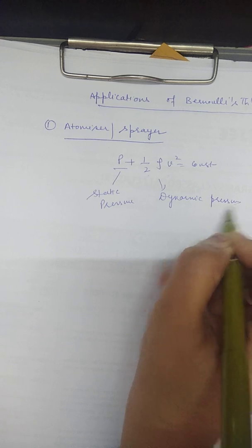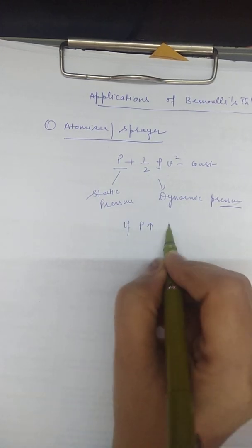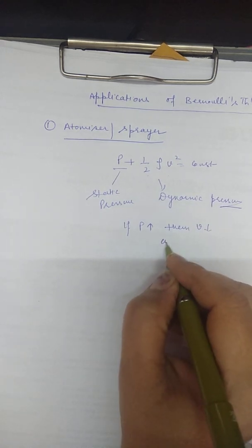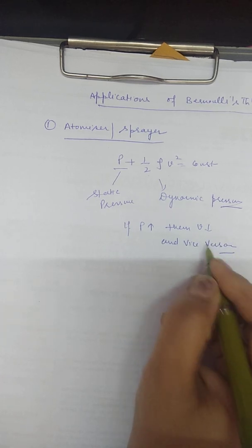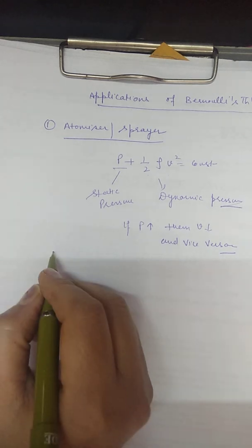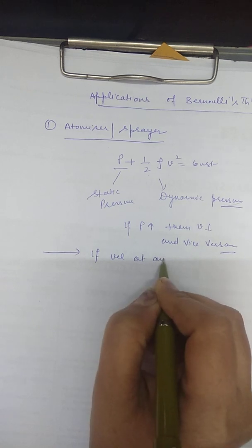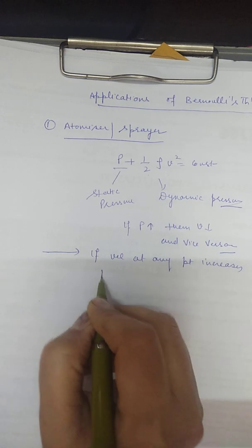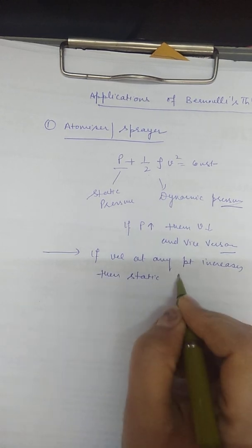If one quantity increases, the other decreases. If P increases, then V decreases and vice versa. Basically, if velocity at a point increases, then the static pressure at that point decreases.